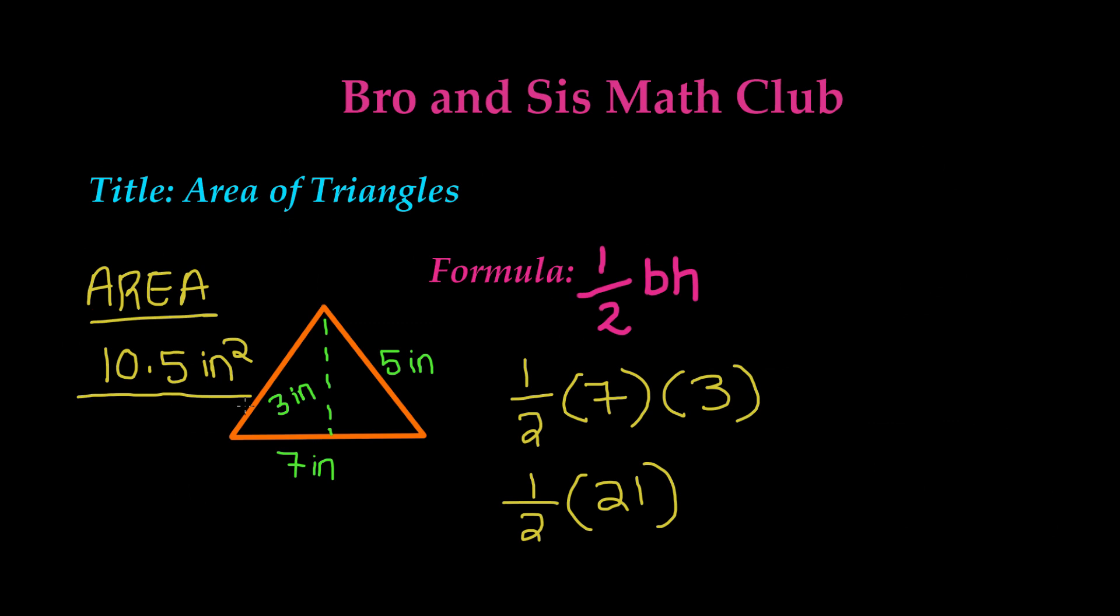So this is how you find the area of a triangle. Remember this formula, 1 half times base times height, and you can find the area of any given triangle. Thank you for watching this video, and we will see you guys in our next video. Bye!